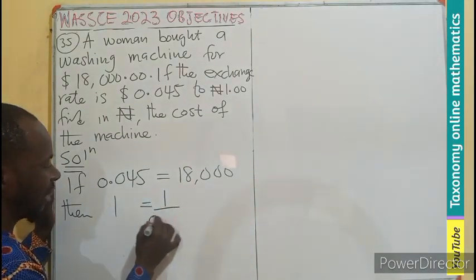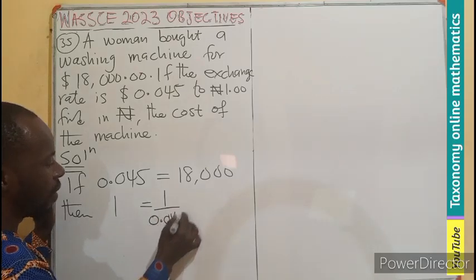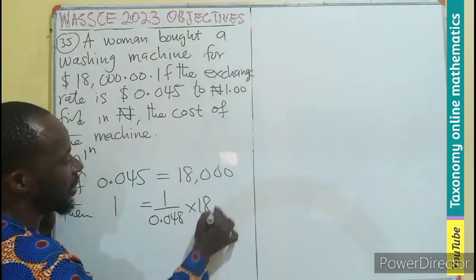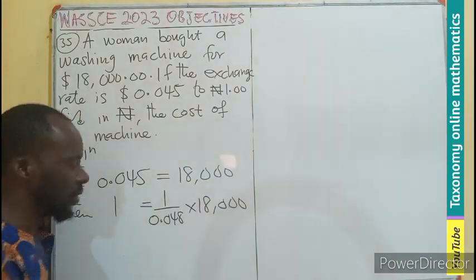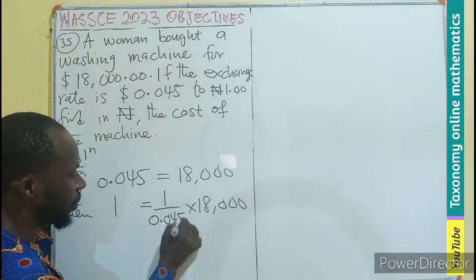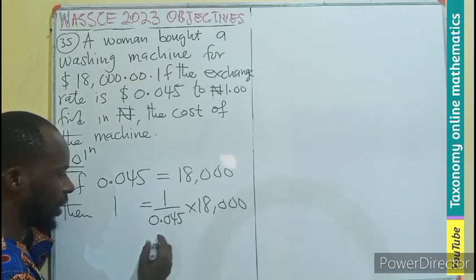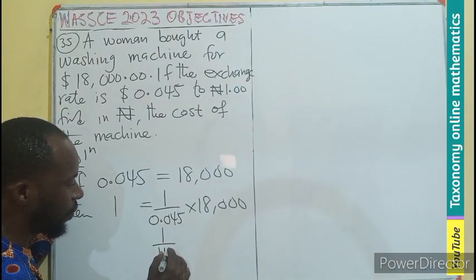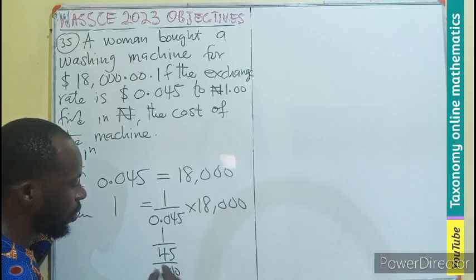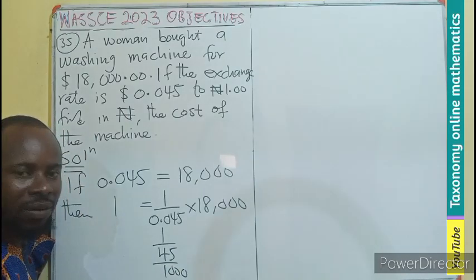let's divide. 1 divided by 0.045 times 18,000. This is 45 as we have there. So this is going to be 1 divided by 45 divided by 1,000, right?